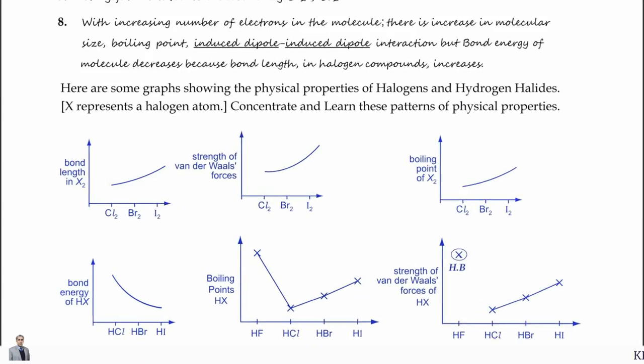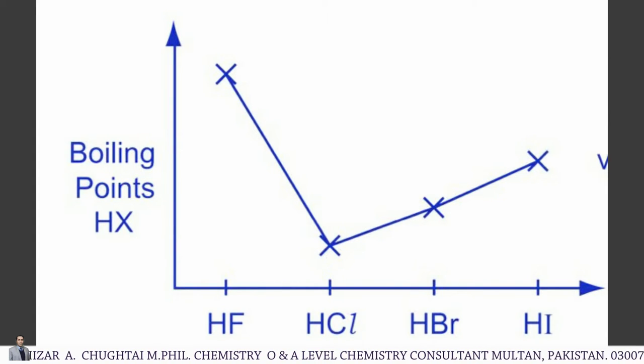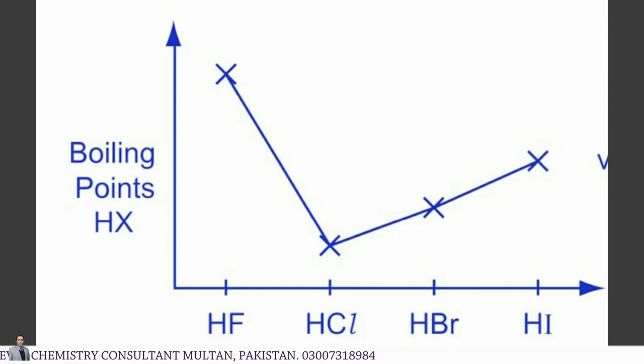Boiling point of HX hydrogen halides and strength of the van der Waals forces of hydrogen halides have also similar patterns. HF has the highest boiling point in this case. Then there is a proper trend shown by HCl, HBr, and HI. It gradually increases from HCl to HBr and HI.